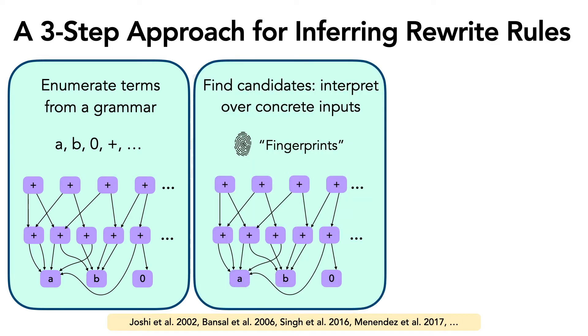The next step is to find candidate rewrites. Some prior work has used the concept of fingerprints, where candidates are found by evaluating the intermediate terms over concrete inputs. If the output of evaluating two terms is the same, they can together be a candidate rewrite. For example, here we have the commutativity of addition, here we have the identity of addition, and then here we have a somewhat less useful, confusing-looking candidate, but it is still a candidate if the fingerprints match for the left-hand side and right-hand side.